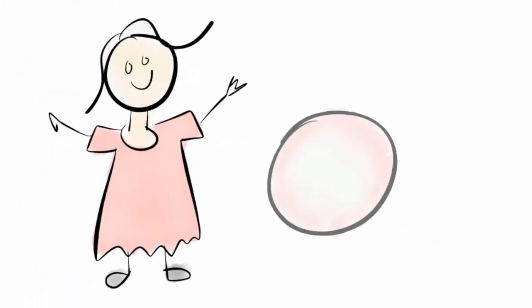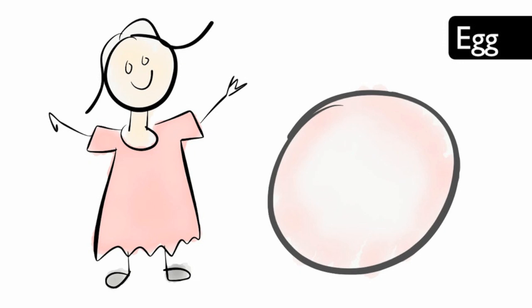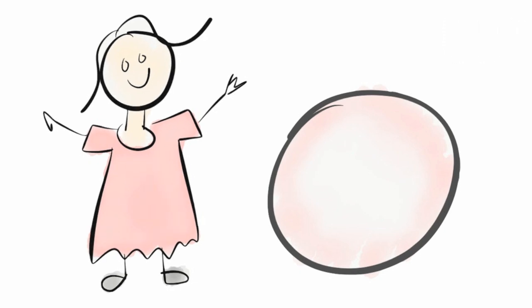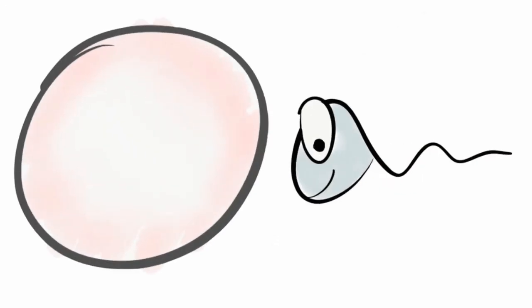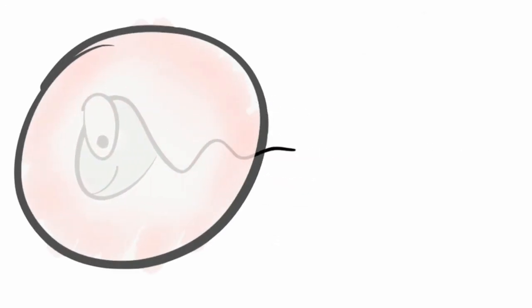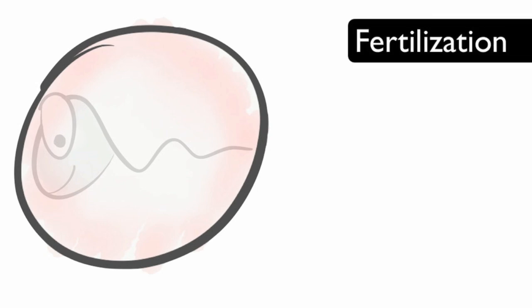The female reproductive cell is called the egg. An egg cell contains 50% of the mother's genes. When the two cells join together, the genetic material combines. The joining of reproductive cells is called fertilization.